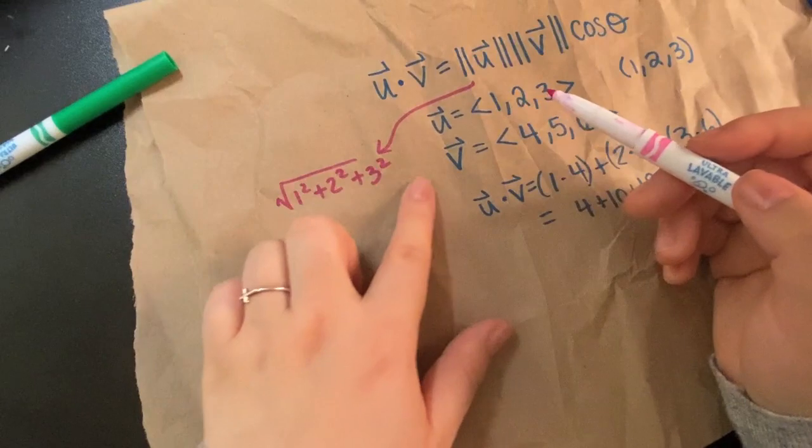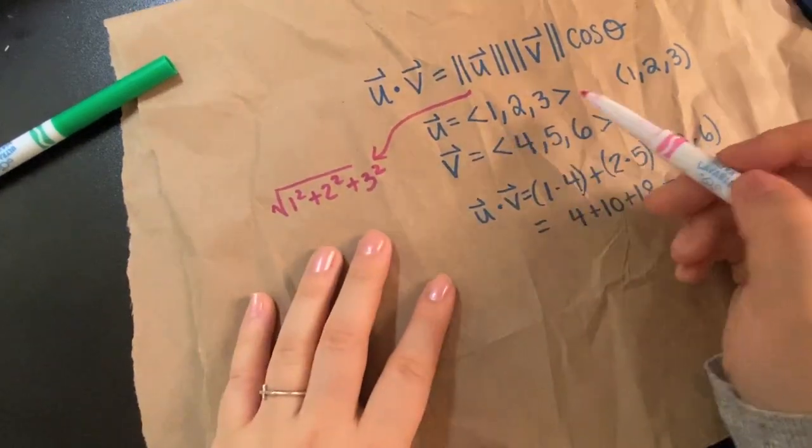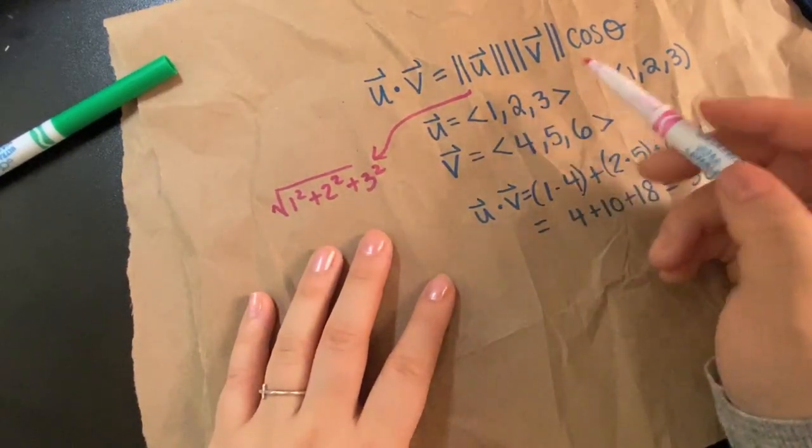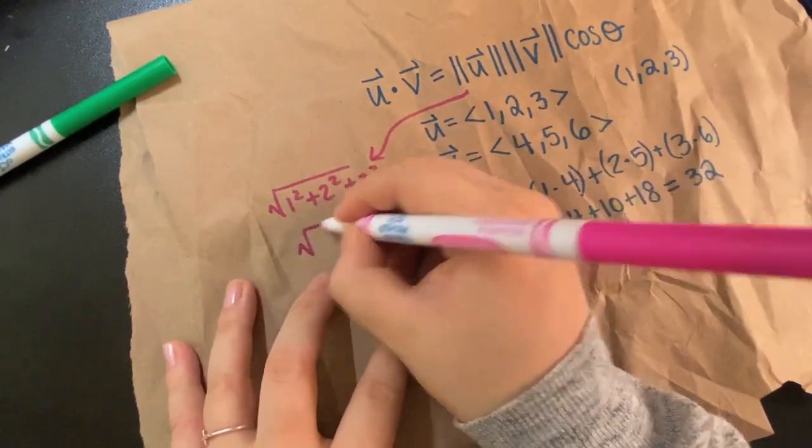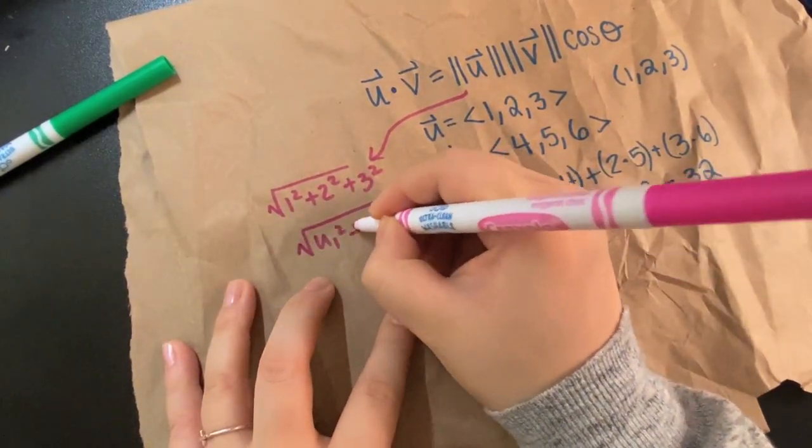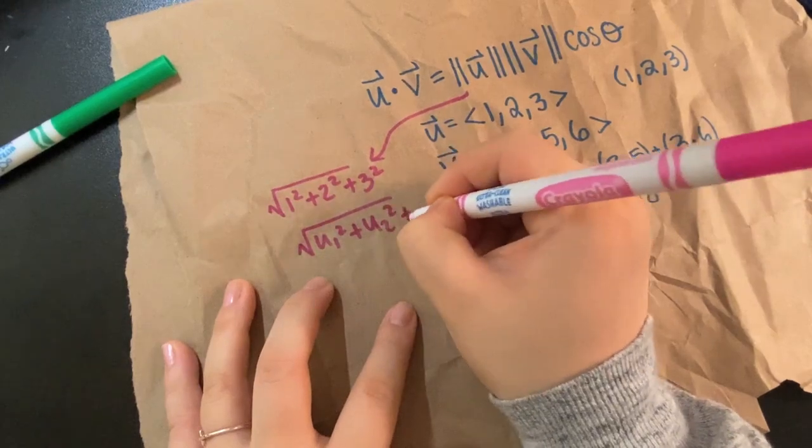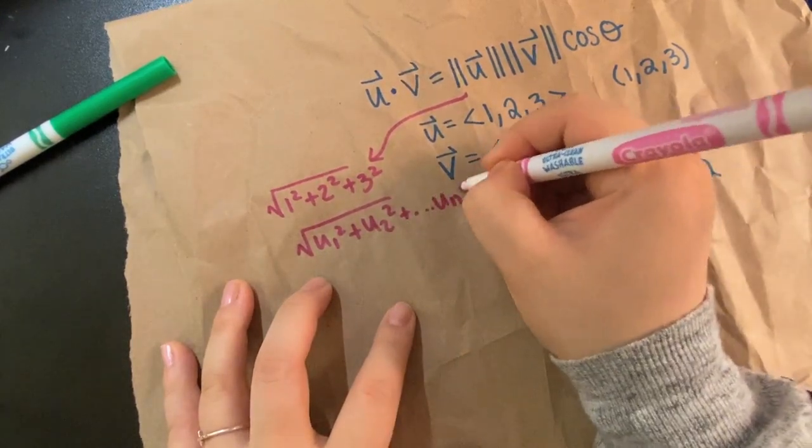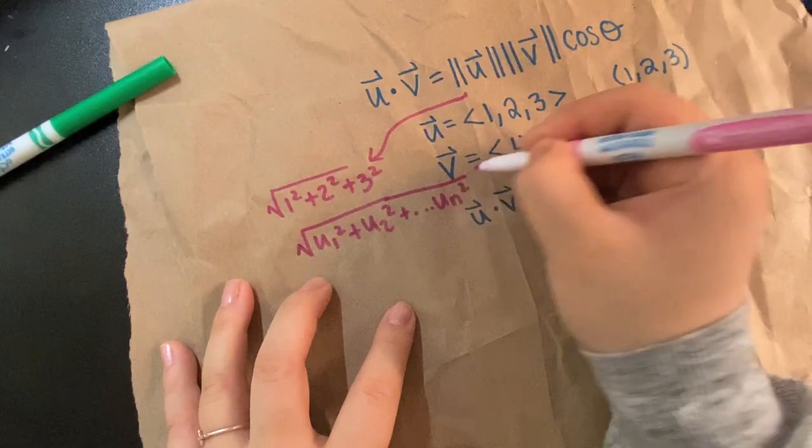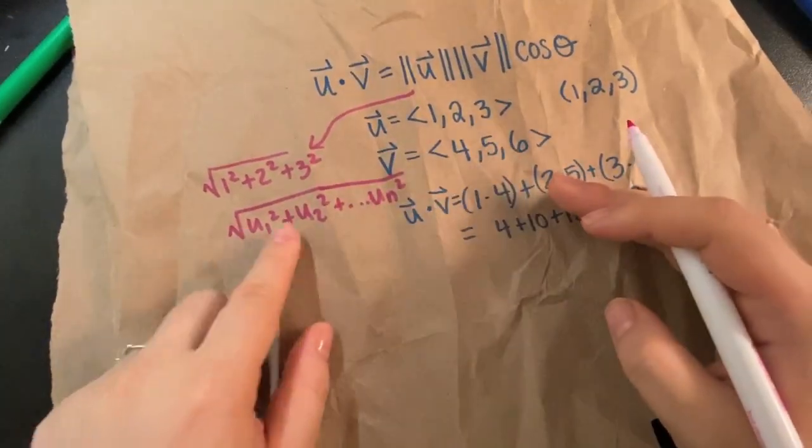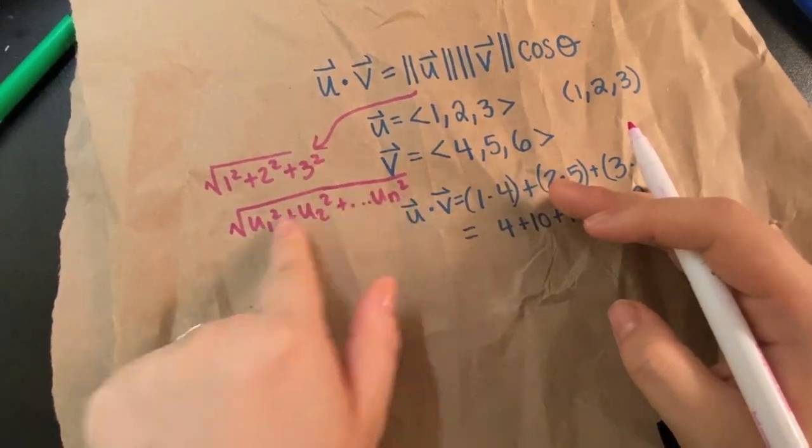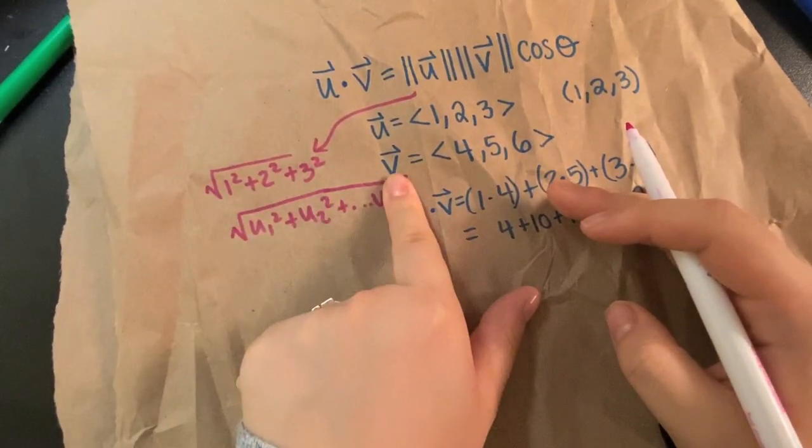The magnitude in this case is just going to be the square root of one squared plus two squared plus three squared. So just however many dimensions. But if this were U1, U2, U3, it's just U1 squared plus U2 squared plus dot dot dot U_N squared. And then the square root of that whole thing. So you square first, square each coordinate first, then add them together, and you get that number and then take the square root of that.